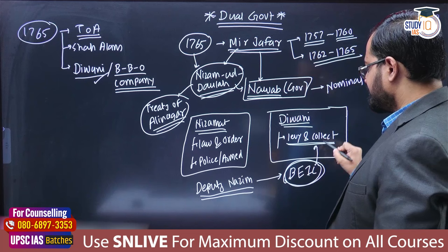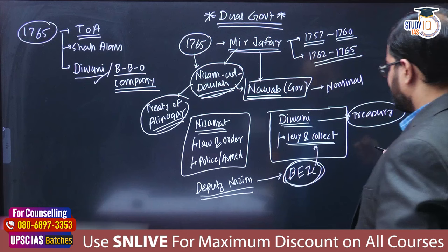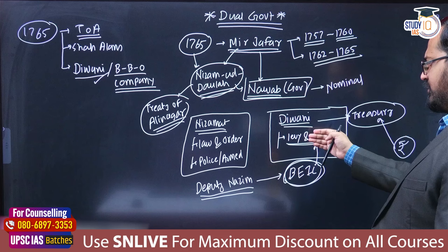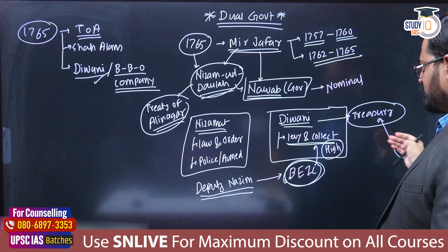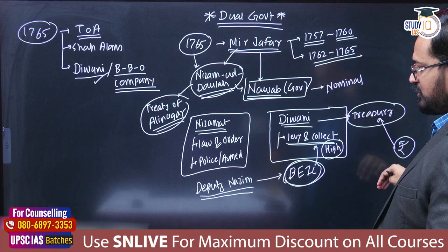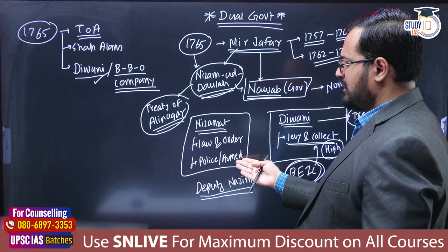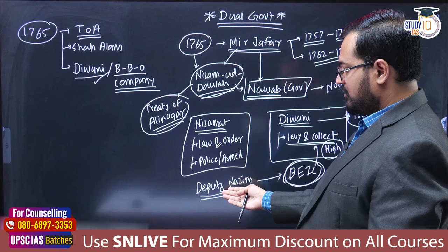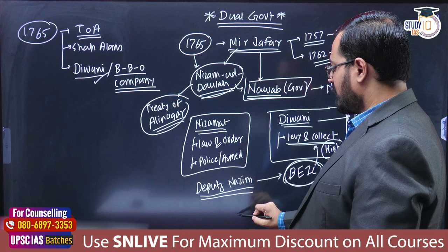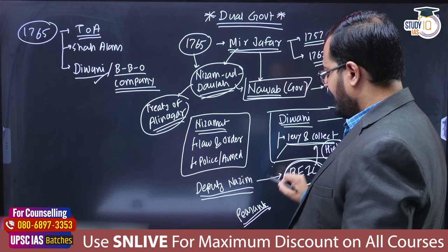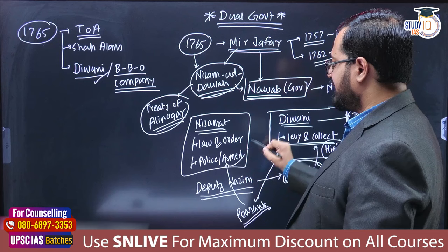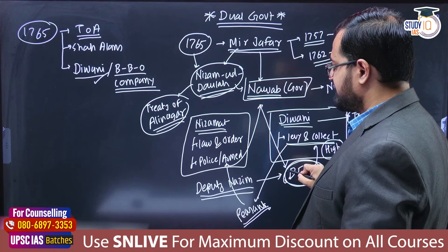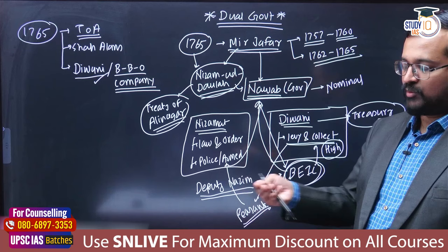In this dual government, Nizamud Daula was the nominal authority — like the President of India — while the real authority lay with the British East India Company, which held both Diwani and Nizamat power. The Company was interested in the treasury, so it set the highest possible revenue demand. If revenue wasn't coming, exploitation was carried out at the local level. The peasant farmer had no recourse — it was a misery for the peasantry.